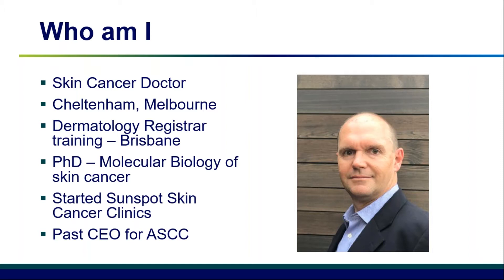Directions of closure — I'm talking about ellipses, but these are also relevant for flaps and grafts. In terms of options, we can look at wrinkle lines, first described by Chrysal versus Langer's lines. Langer designed these lines by doing punch biopsies in corpses and seeing which direction wounds naturally closed. More recently, Dr. Sherrod Paul from New Zealand described BEST lines — biodynamic excisional skin tension lines — and has done a lot of work in the last five to ten years on skin tension and closure directions.